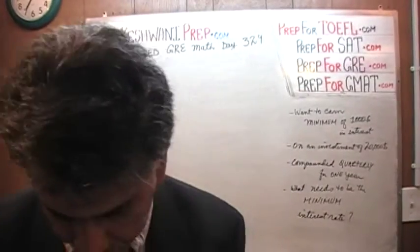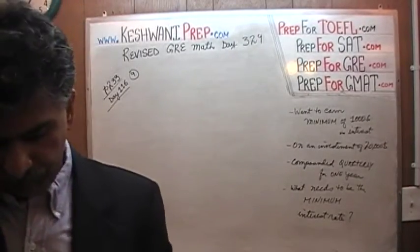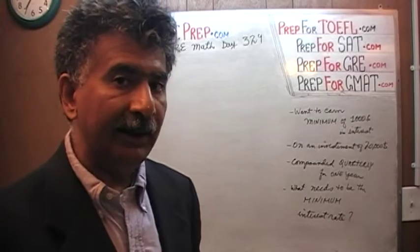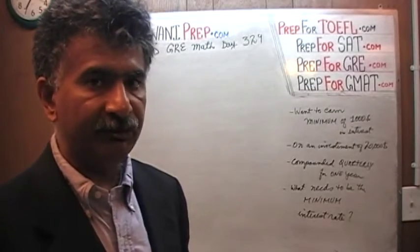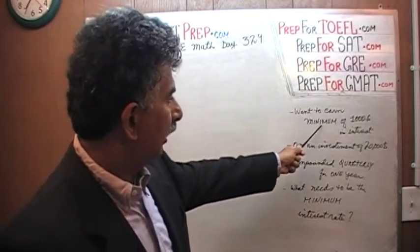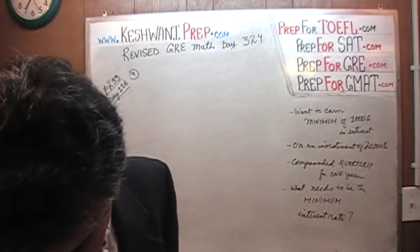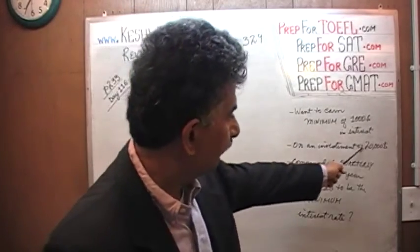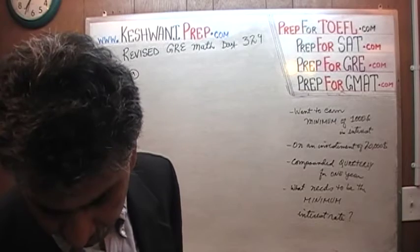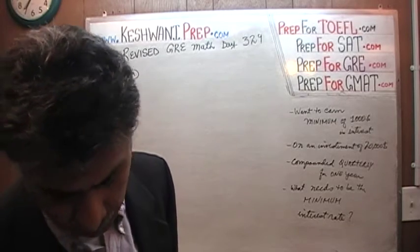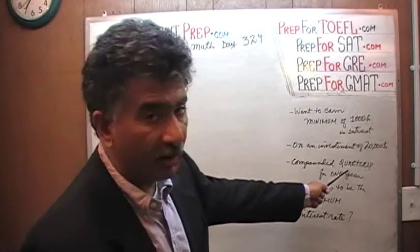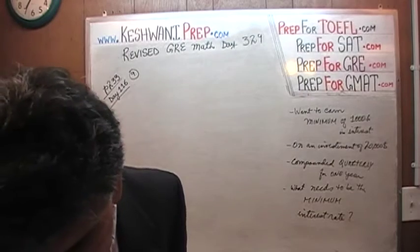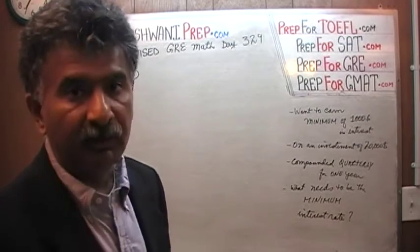Problem number 9 says: a college student expects to earn at least $1,000 in interest — that is, a minimum of $1,000 in interest — on an initial investment of $20,000. The money is to be invested for one year at an interest rate compounded quarterly. The question is: what is the least annual interest rate that will achieve the goal?